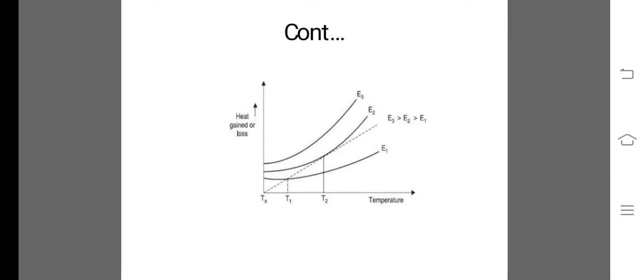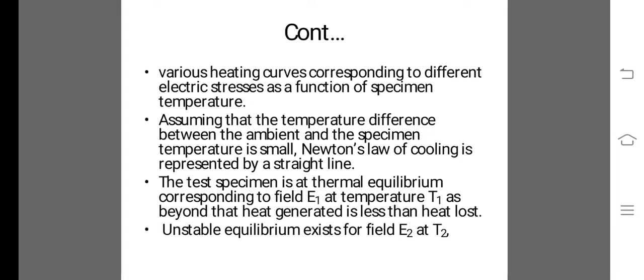This is the thermal breakdown graph. The graph drawn between temperature and heat shows various heating curves corresponding to different electric stresses as a function of specimen temperature. Assuming that the temperature difference between ambient and the specimen temperature is small, Newton's law of cooling is represented by a straight line.